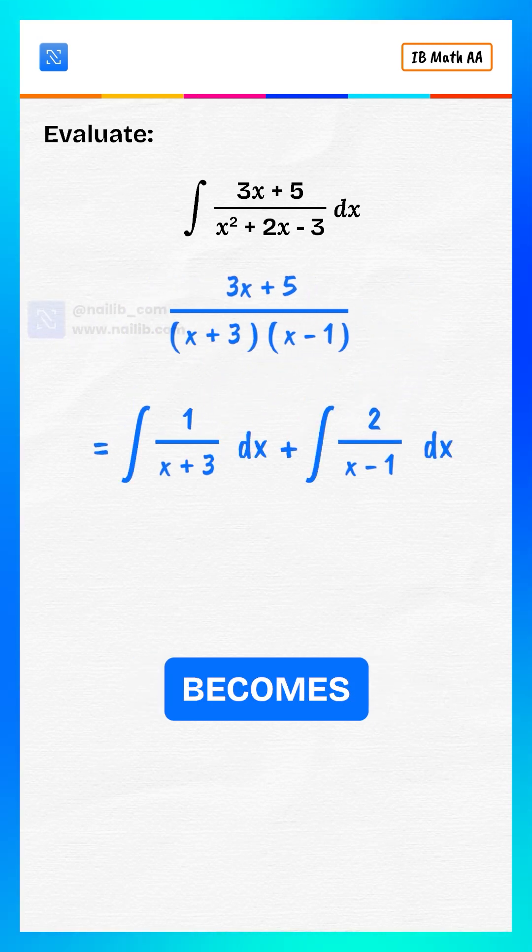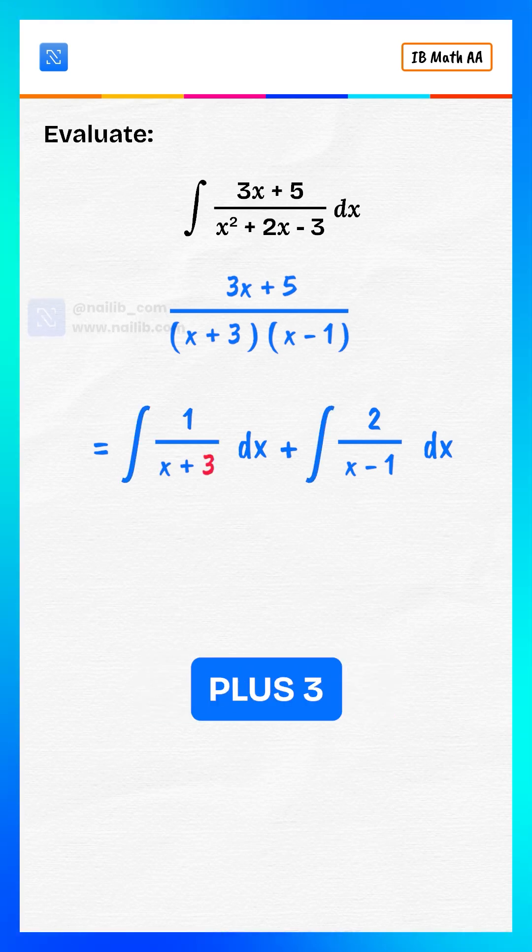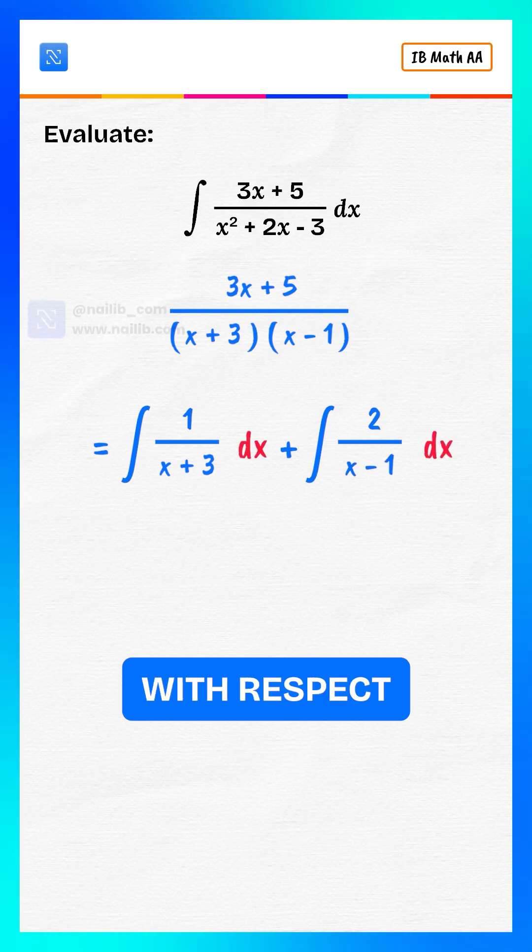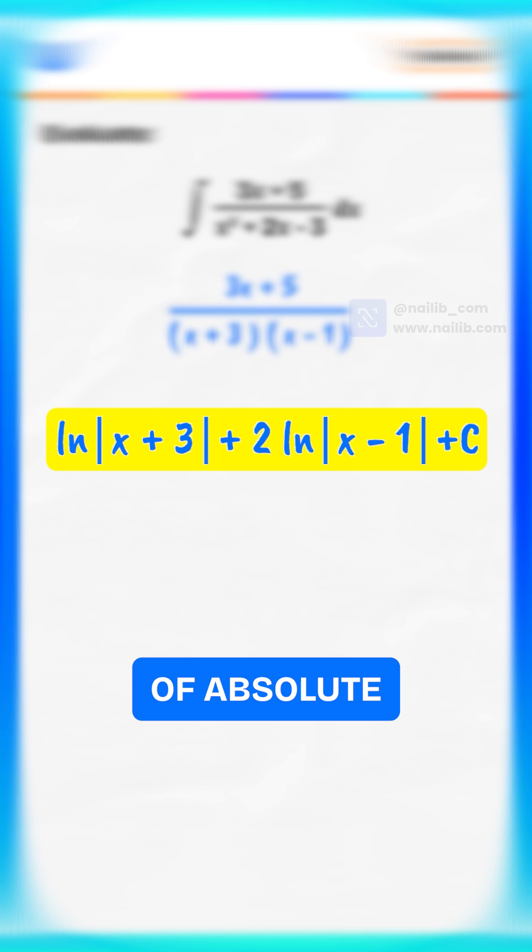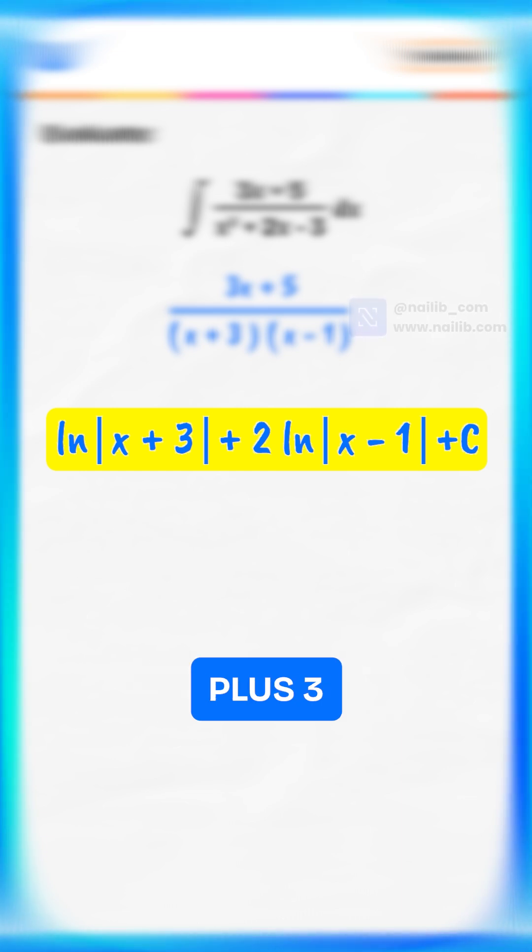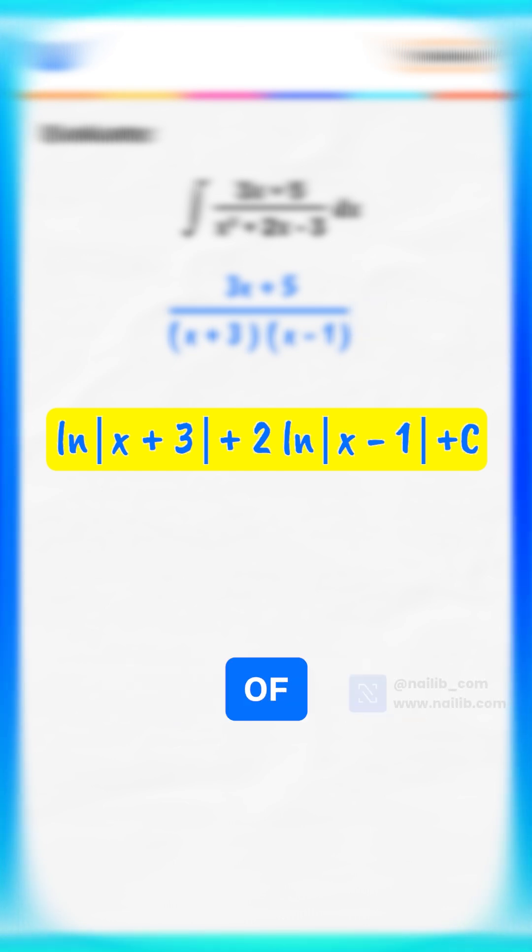The integral becomes integral of 1 divided by x plus 3 plus 2 divided by x minus 1 with respect to x. That gives natural log of absolute value of x plus 3 plus 2 times natural log of absolute value of x minus 1 plus constant of integration.